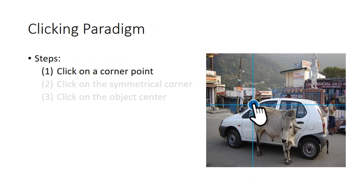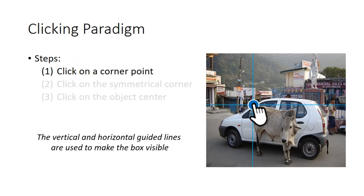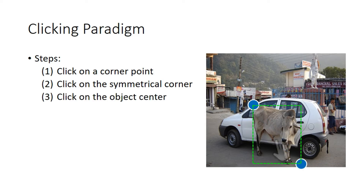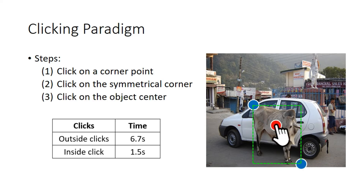Here we show the clicking paradigm of our IOG. First, we click on one of the corners. Then, we click on the symmetrical corner. Finally, we click on the object center. Altogether, these three clicks constitute our IOG.